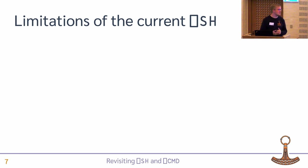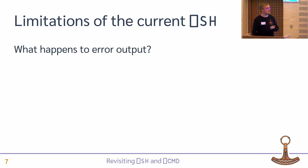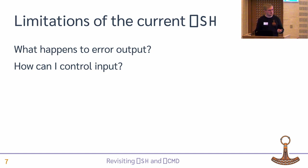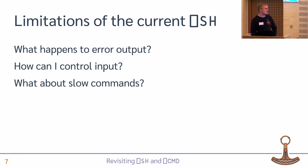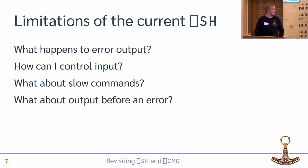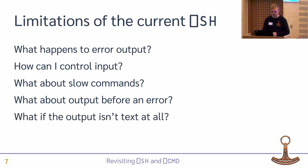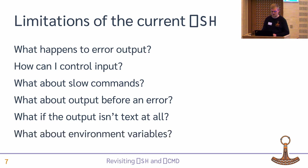There are a bunch of limitations or things that could have been done better. What happens to the error output? Is it possible to control the input to programs? What about commands that take a while to run? The output from the cat command was completely lost when we got the error. What if the output isn't text at all? Currently Quad-SH just assumes that output is text. And what about environment variables?